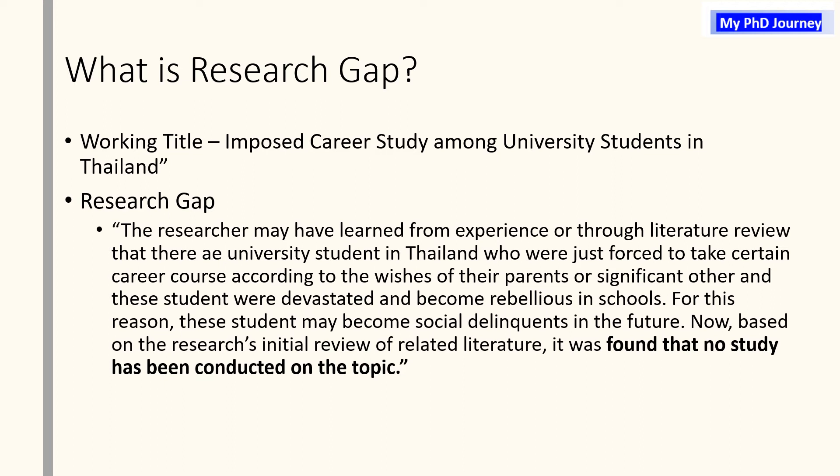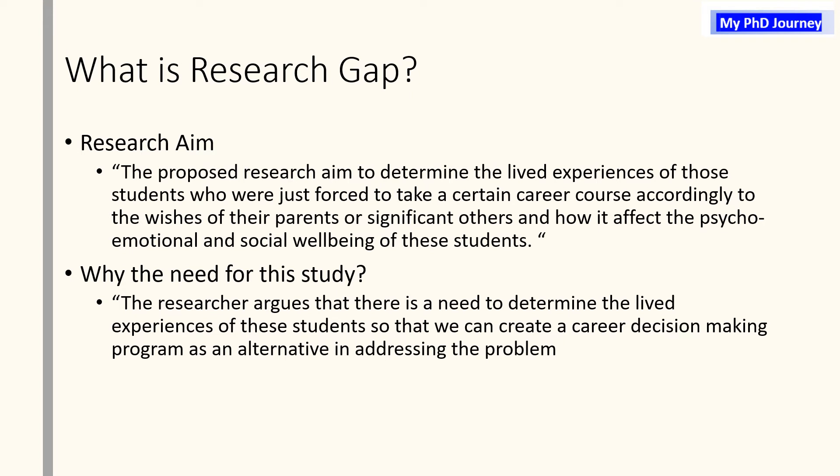For this reason, these students may become social delinquents in the future. Based on the researcher's initial review of related literature, it was found that no study has been conducted on this topic. Research aim: The proposed research aims to determine the lived experiences of those students who were forced to take a certain career course according to the wishes of their parents or significant others, and how it affects the psycho-emotional and social well-being of these students.